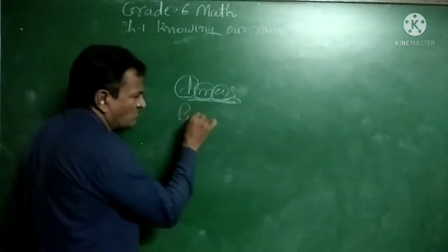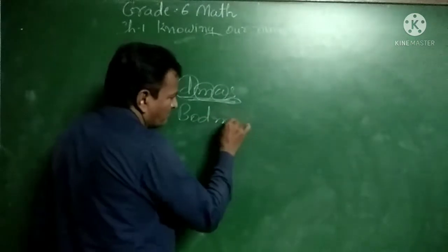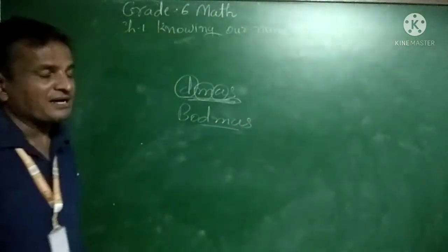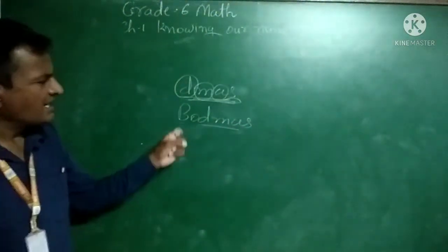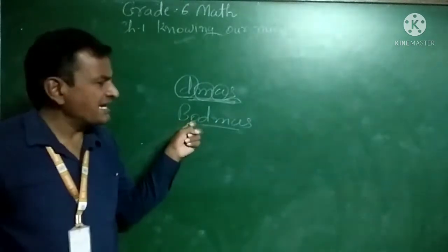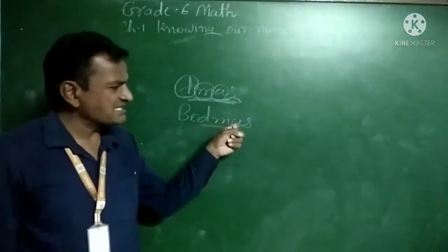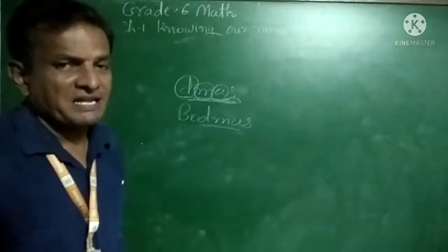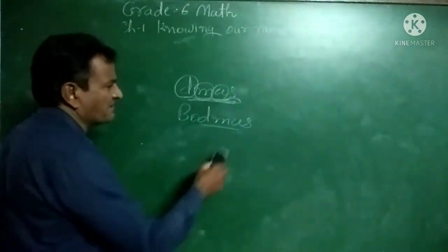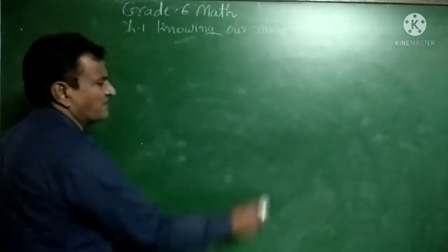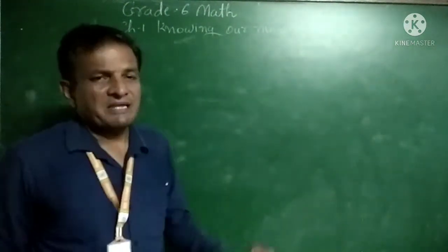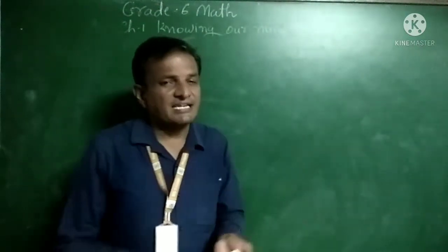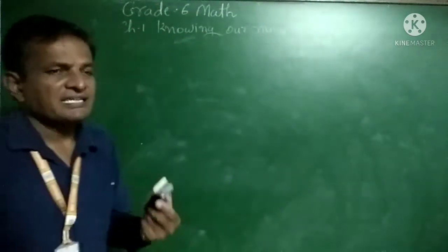Today we are learning about BODMAS. B means Bracket — so BODMAS stands for Bracket, Division, Multiplication, Addition, and Subtraction. When we simplify any argument in a mathematical equation, first we simplify inside the brackets — whichever operation is inside the brackets.